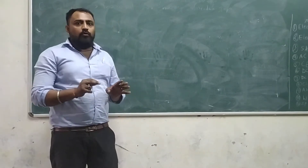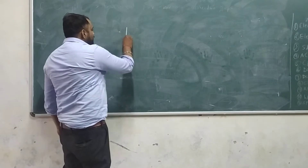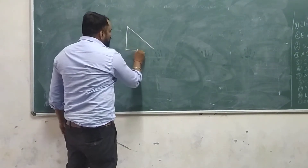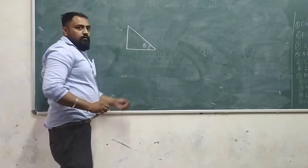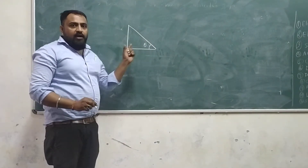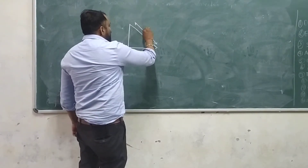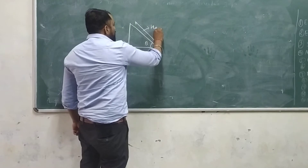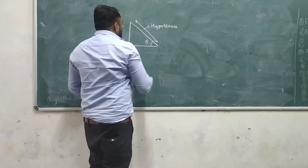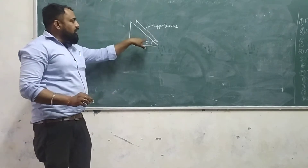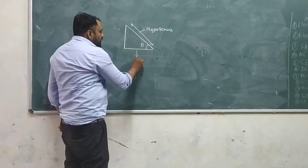Trigonometry applies to the right angle triangle, in which one right angle is there. If we call this angle as theta, then the longest side of the right angle triangle is called the hypotenuse. The adjacent side, which is not the hypotenuse, is called the adjacent side.